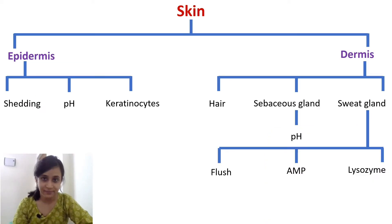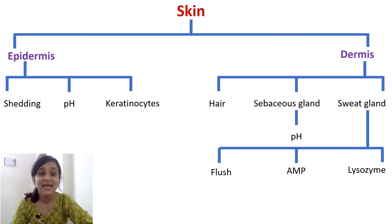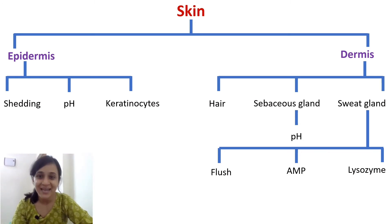First is skin, and skin is divided into two parts: epidermis and dermis. Epidermis is the outermost layer and dermis is the innermost layer. The outermost layer of our skin undergoes continuous shedding — that's why we use a skin scrubber, right? It removes our dead skin cells. This shedding of skin prevents pathogens from entering our body.